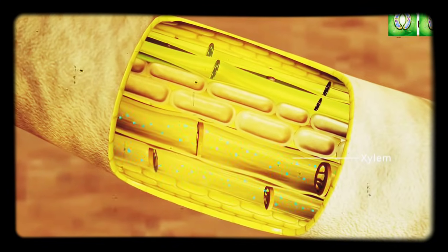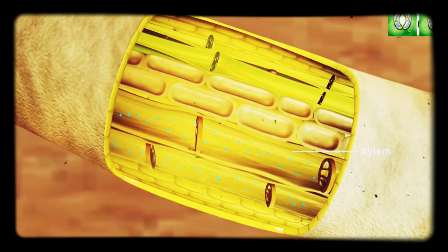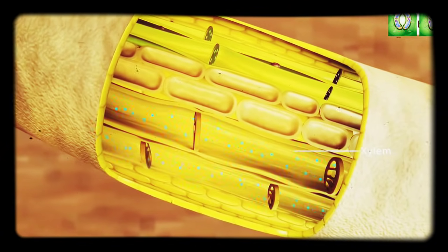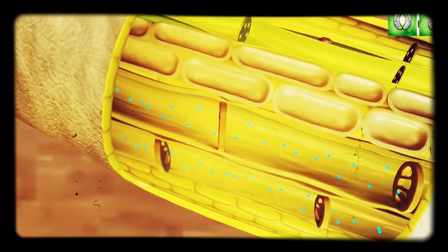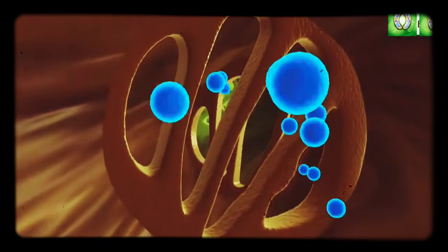Xylem vessels are long, narrow, hollow tubes containing no living material. The xylem transports water and soluble mineral nutrients from the roots to other parts of a plant.